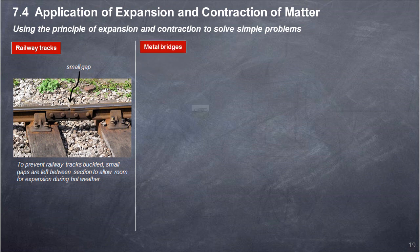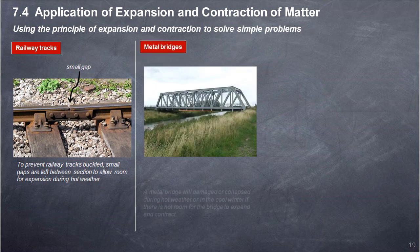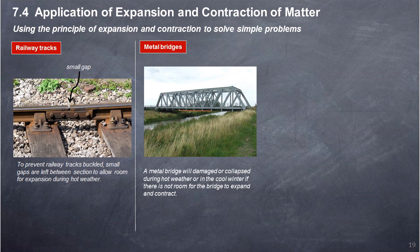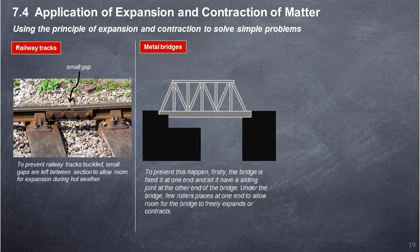Metal bridges: a metal bridge will be damaged or collapse during hot weather or cool winter if there is no room for the bridge to expand and contract. To prevent this, the bridge is fixed at one end and has a sliding joint at the other end. Rollers are placed under one end of the bridge to allow it to freely expand or contract.